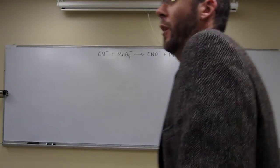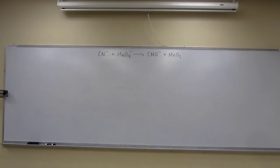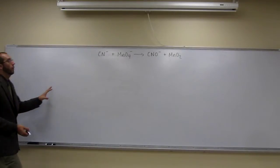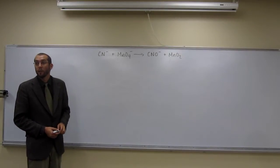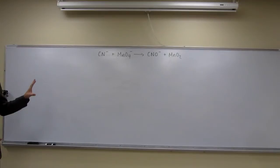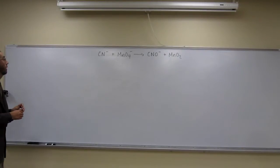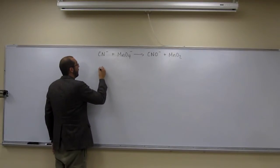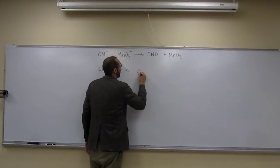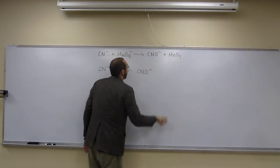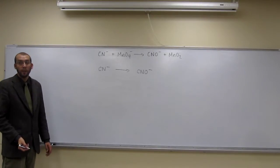Let's try this problem. We're going to balance this redox reaction in a basic solution. On the way, we're going to see what it would look like if it were balanced in an acidic solution as well. In order to do this, we have to first break the reaction up into its half-reactions — its oxidation and reduction half-reactions. We'll break it up into the pieces and identify whether these are oxidation or reductions.